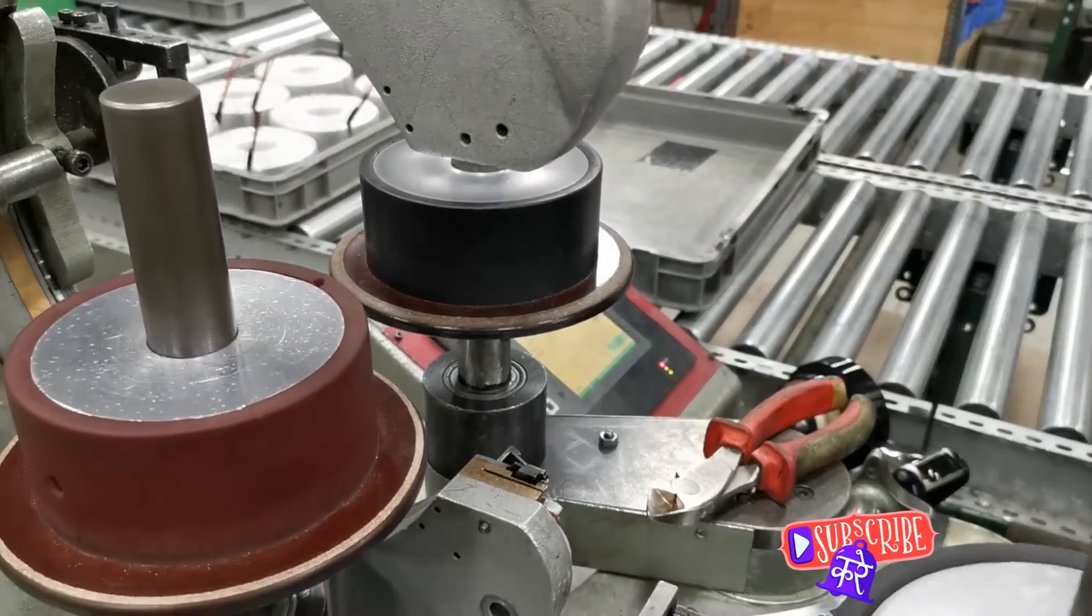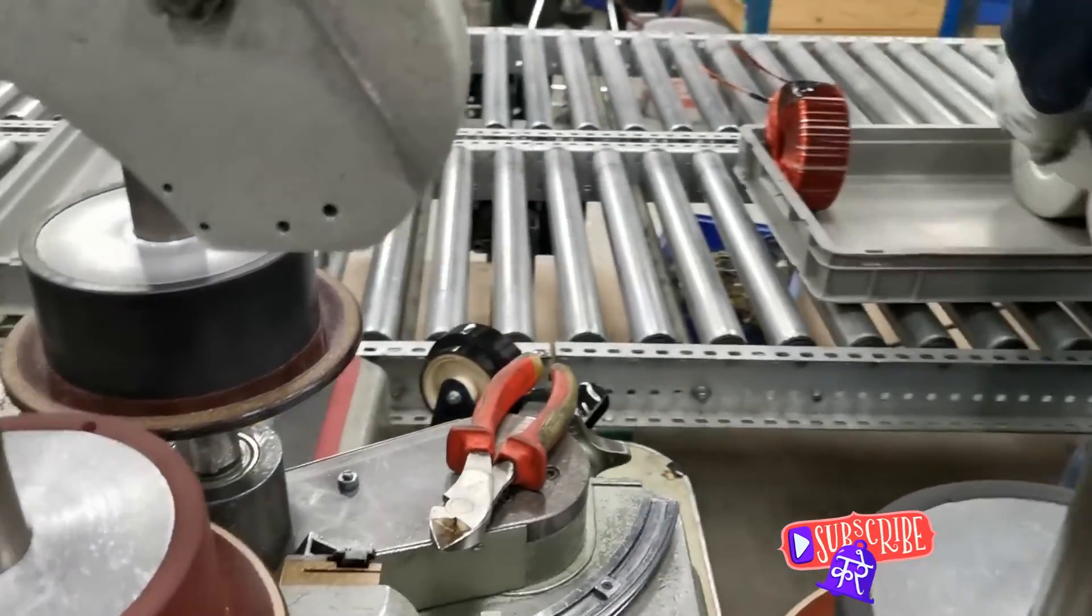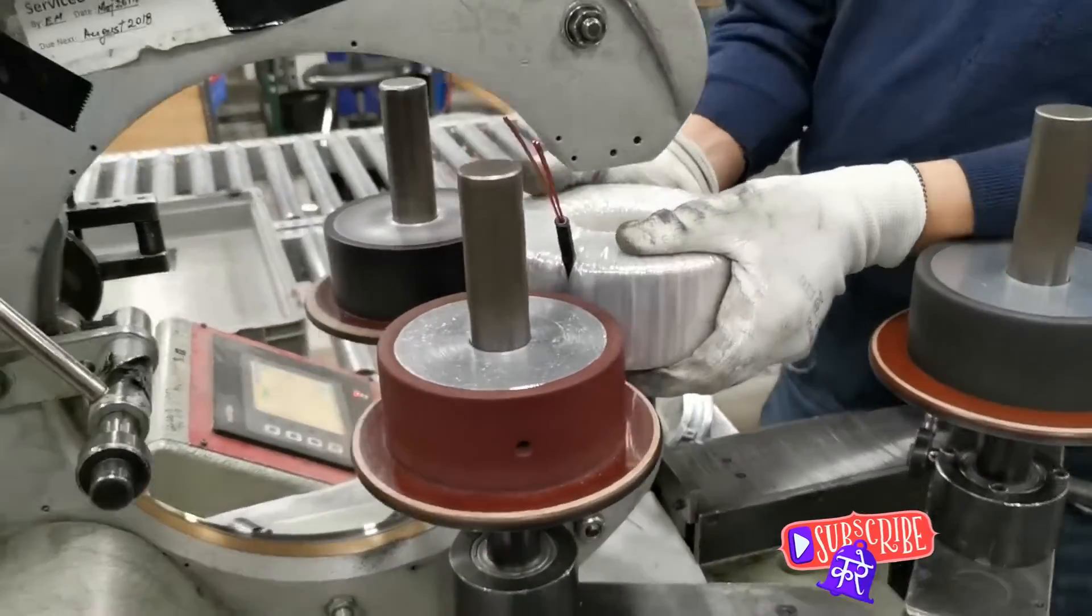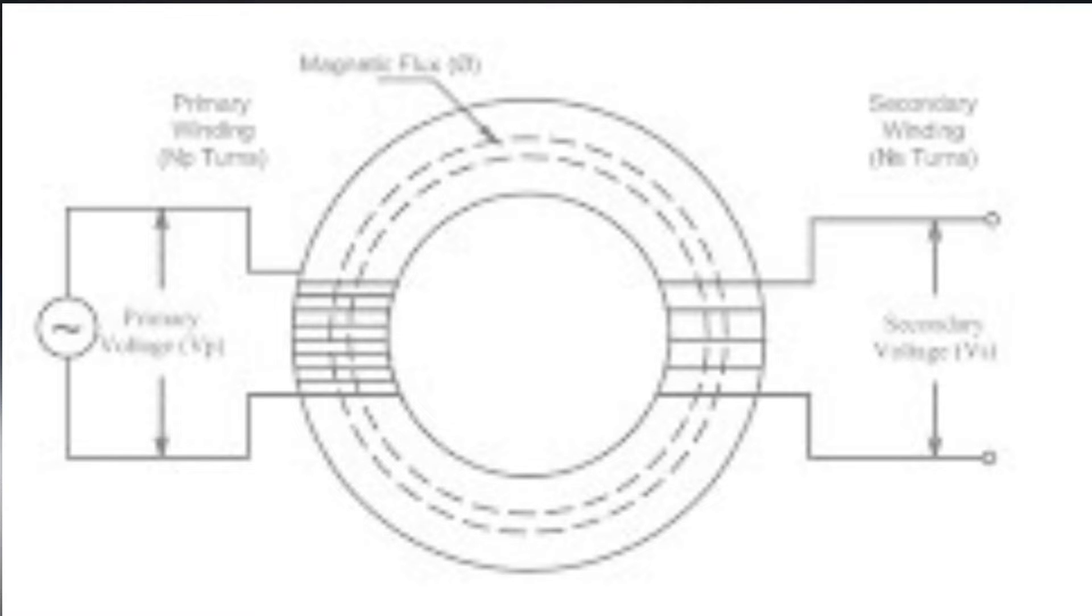Speaking of windings, let's discuss those next. The primary winding is the input side of the transformer. It's here that the alternating current, or AC, first enters the transformer. The number of turns in this winding determines the input voltage.